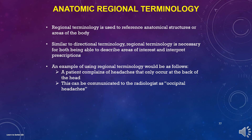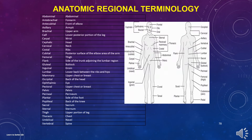Now we have to learn the anatomic regional terminology. Regional terminology is used to reference anatomical structures or areas of the body. Similar to directional terminology, regional terminology is necessary for being able to describe areas of interest and interpret prescriptions. For example, a patient who complains of headaches at the back of the head can be communicated to the radiologist as occipital headaches. We are going to learn these terms one by one in alphabetical order.